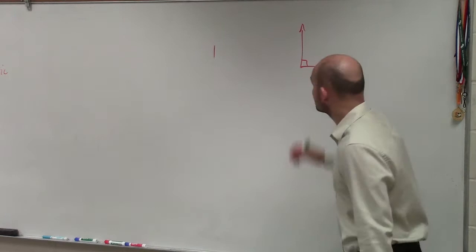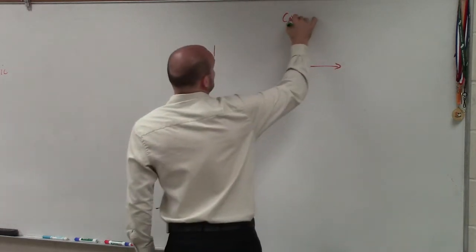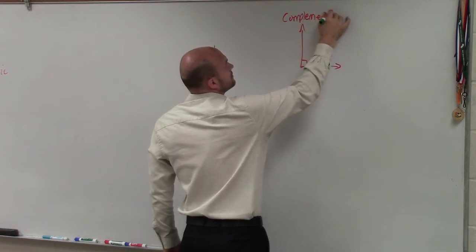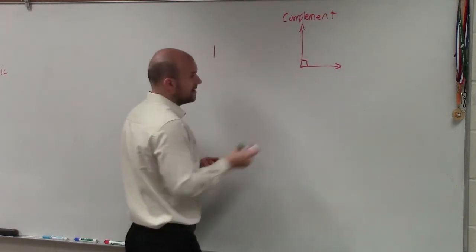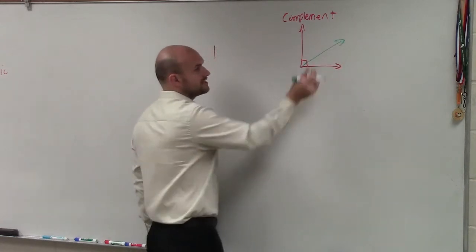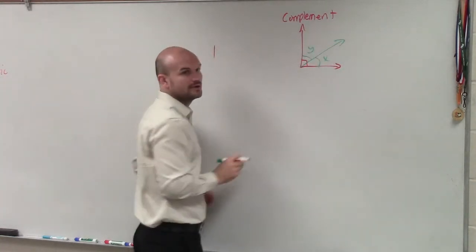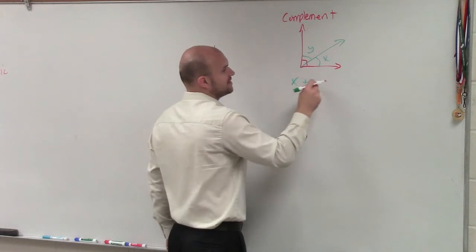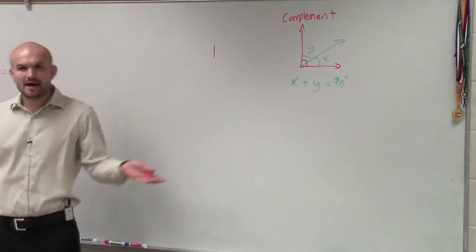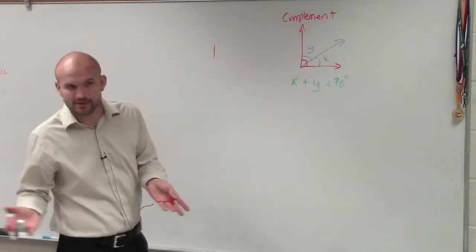complements are going to be two angles that add up to 90 degrees. If you have two angles, let's call them x and y. Then the complement is going to be x plus y equals 90 degrees. Those two angles are complements of each other because they add up to 90 degrees.